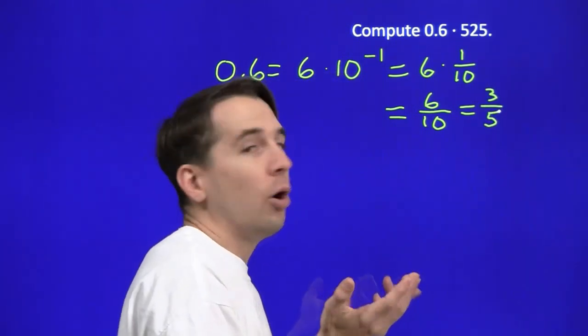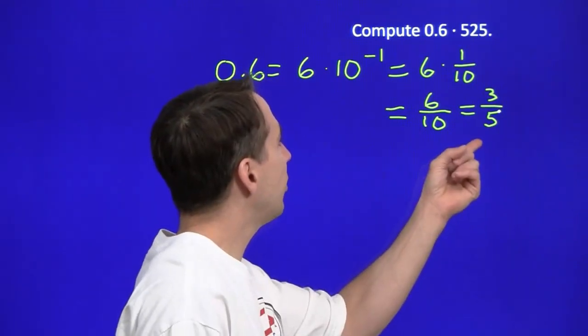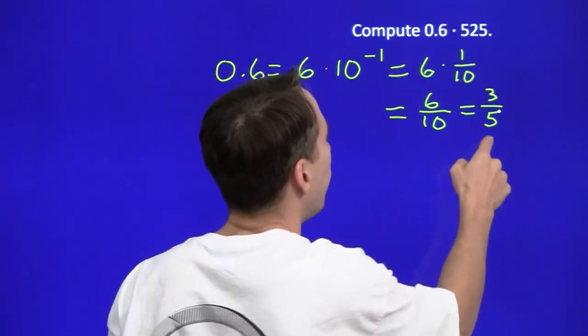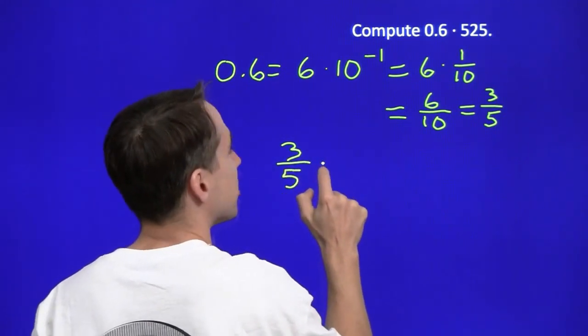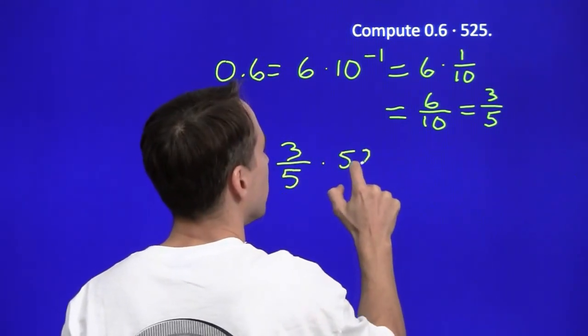Why do we care? Oh, that's brilliant! When we have it as a fraction like this, if I turn this 0.6 into 3 fifths, then my problem is just 3 fifths times 525.